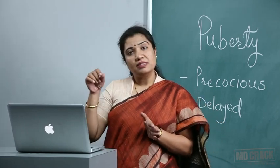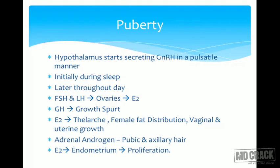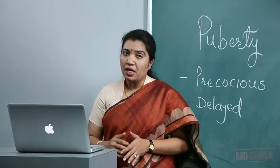The average age of puberty is 12 to 13 years. Pubertal changes begin when the hypothalamus starts secreting GnRH in a pulsatile form — that is the beginning of puberty. Initially this pulsatile secretion occurs only during sleep, and later it occurs throughout the day.